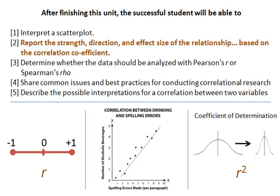If we want to describe how strong is this correlation in terms of making predictions, we call that the coefficient of determination. To get an idea, we square r. So if r is .5 and you square it, .25 is the coefficient of determination. It tells you the percentage of the variance that is accounted for by knowing the correlation. In this case, if r is .5 and the coefficient of determination is .25, that means 25% of the variance is accounted for, but there's still 75% of the variance remaining due to things like educational level, how often they read, whether they do crossword puzzles, and other things.